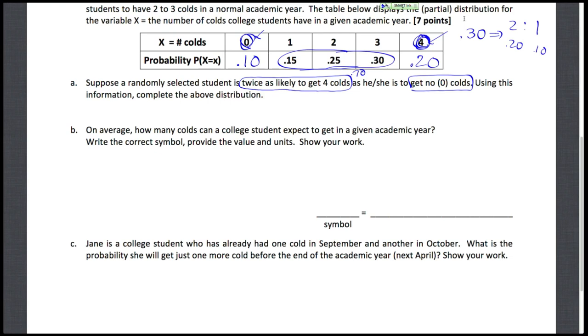We're now going to summarize this distribution by reporting on average how many colds students can expect to get in a given year. Their expected value or mean. We're supposed to write the correct symbol, provide the actual value, and don't forget the units in showing your work. This distribution is not symmetric, so I can't readily see it. It's not going to be the value of two. I will have to compute it, and I'm asking for the expected value or the mean.